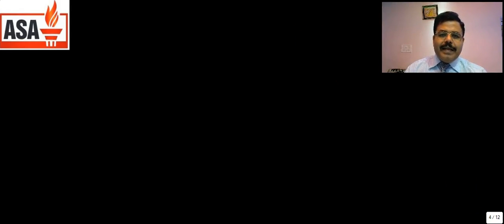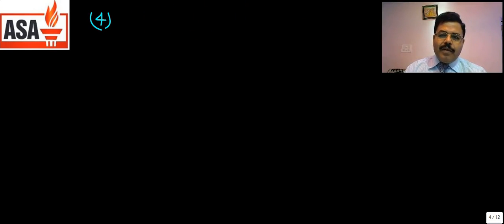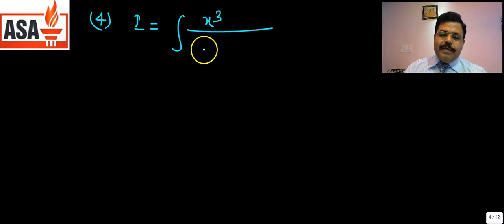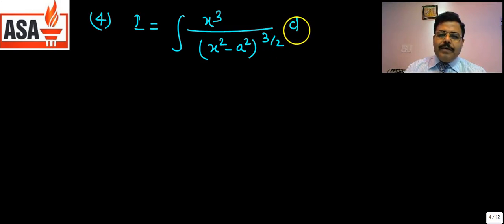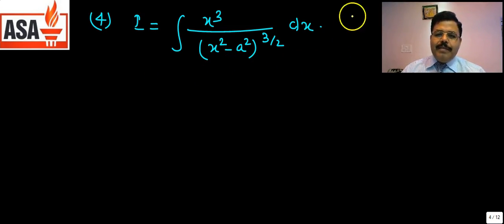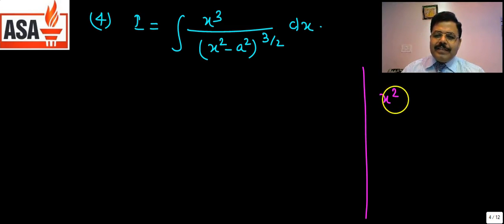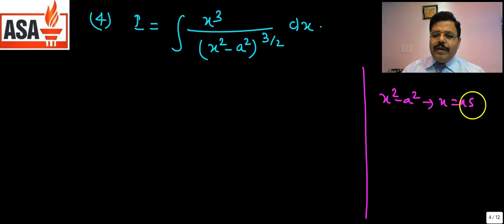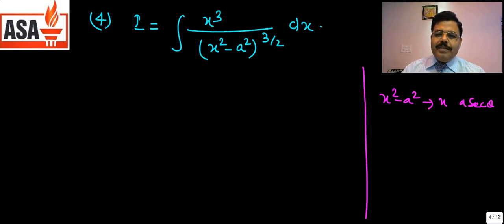Question number 4: ∫x³ / (x² − a²)^(3/2) dx. We have learned that whenever there is an x²−a² type pattern, we put x = a sec θ. For a²+x², use x = a tan θ; for a²−x², use x = a sin θ; for (a−x)/(a+x), use x = a cos θ or a cos 2θ. These are very important substitutions to remember.